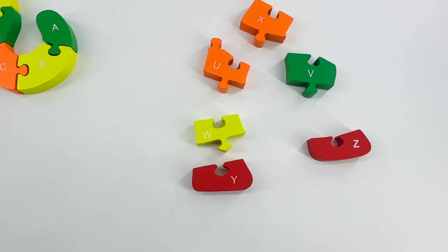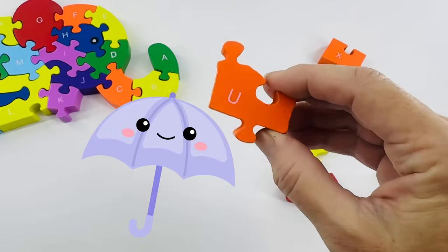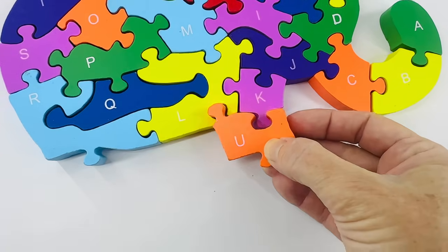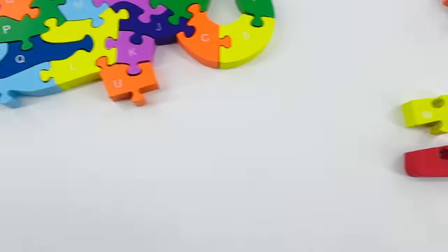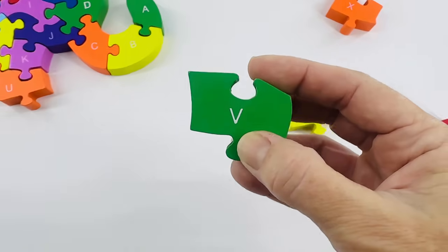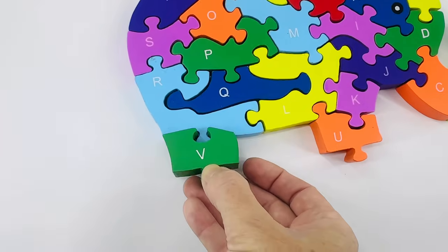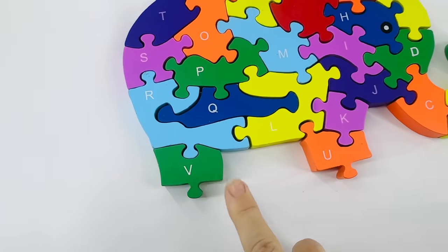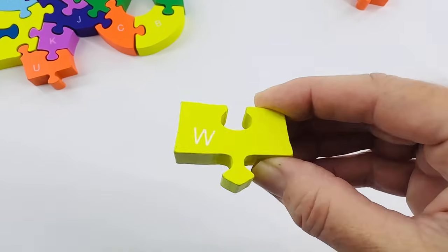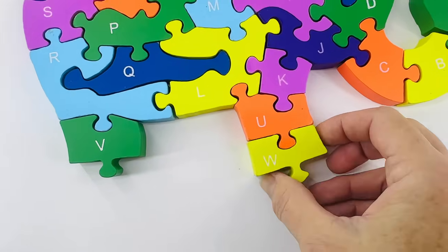After the letter T is the letter U. Right here. U is for umbrella. I think it looks like it fits right there, does it? It does. After the letter U is the letter V. Here it is. V is for vampire bat. And this one goes right here. After V is the letter W. Here it is. W is for walrus. I wonder which side it goes on. Right there? Yep.